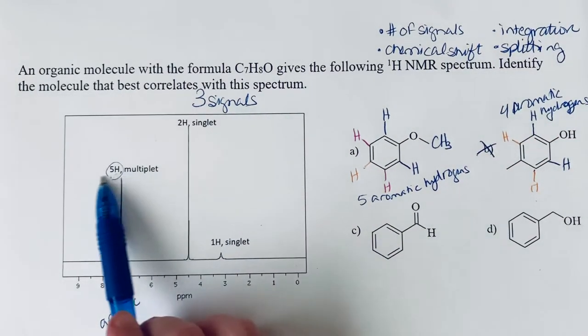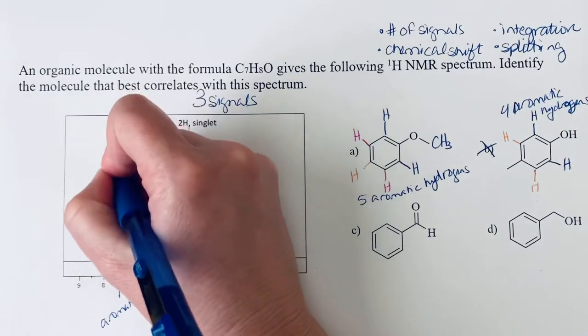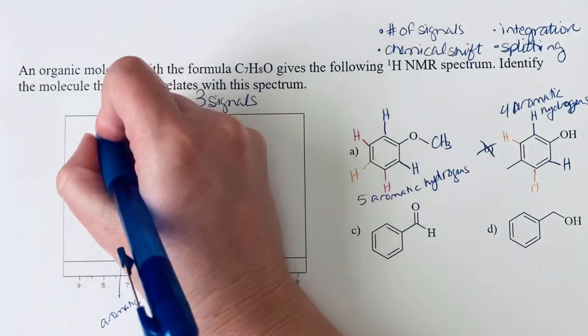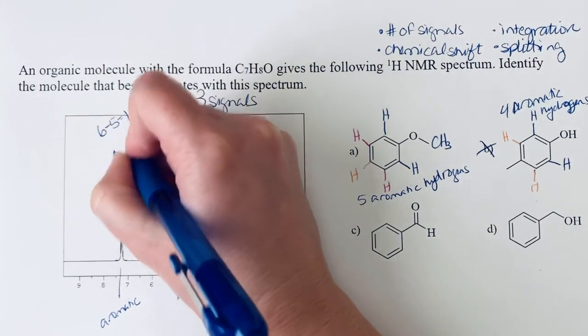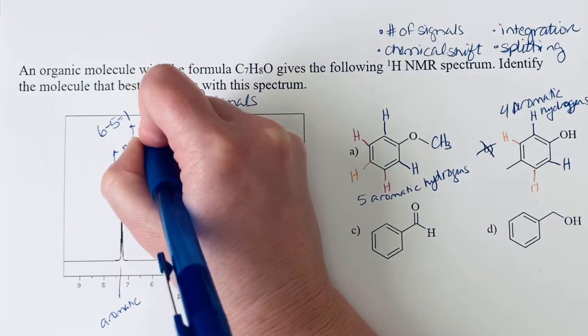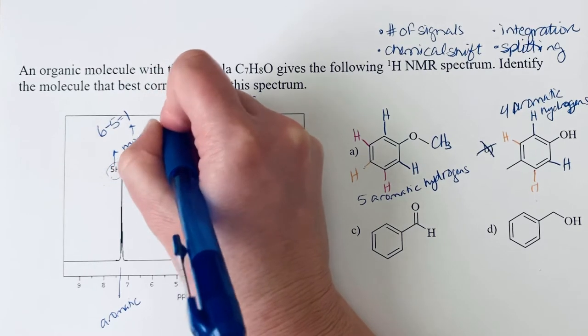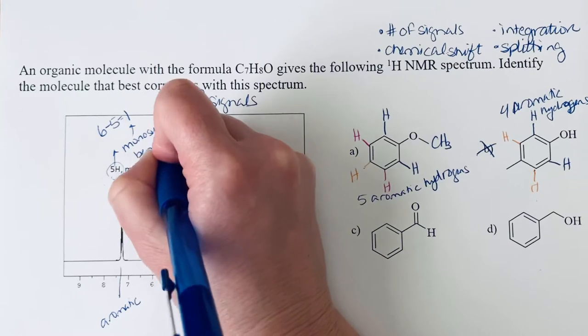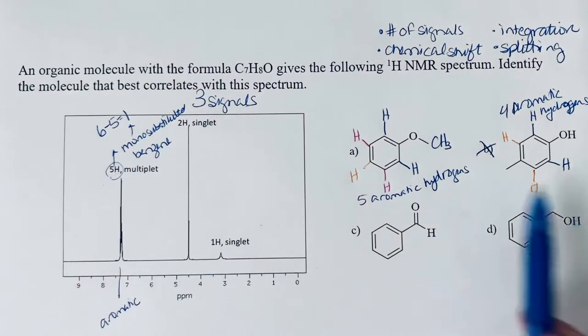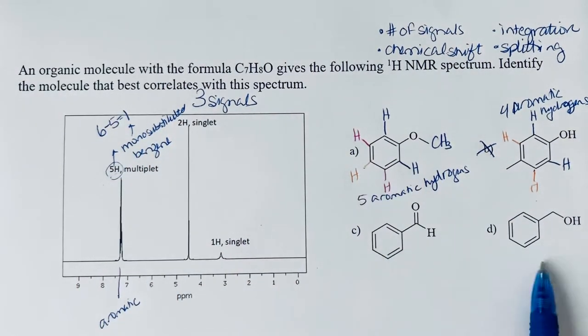When you see five hydrogens in the benzene ring region, unsubstituted benzene has six hydrogens. Six minus five is one. So this tells me that it is a monosubstituted benzene. So maybe we should have finished that thought earlier, because that would have definitely eliminated B. But A, C, and D are all monosubstituted benzenes.